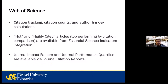Web of Science is used for citation tracking, citation counts, author h-index, and many other things. It also has access linked to Essential Science Indicators, which provide hot and highly cited articles. Web of Science also has access to journal impact factors through Journal Citation Reports, and we're going to cover that briefly as well.